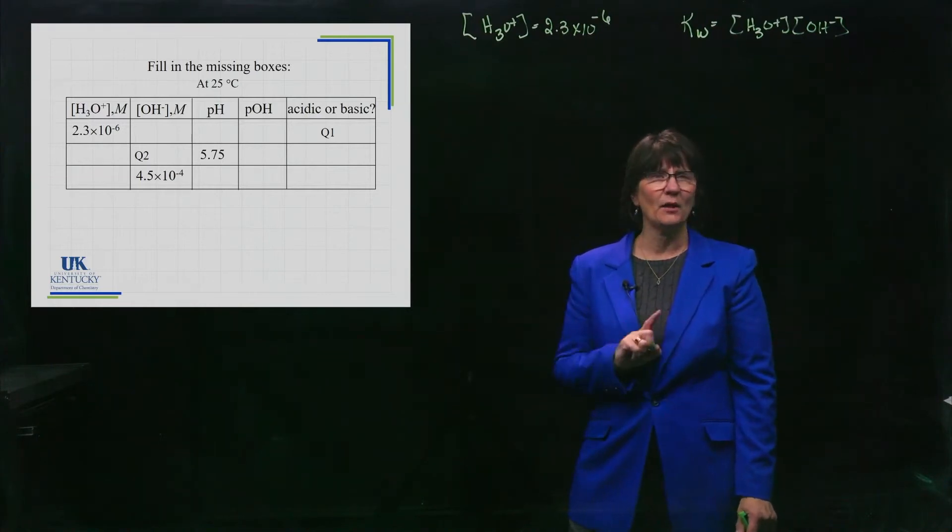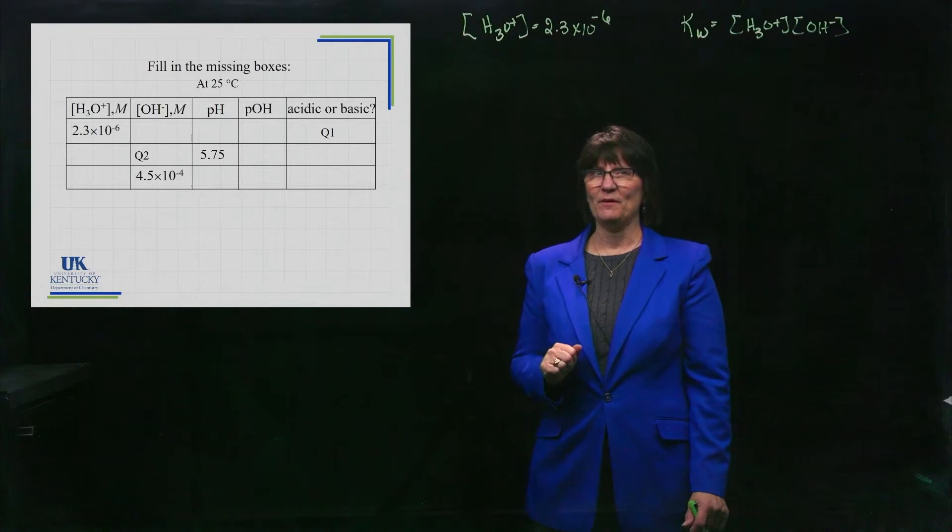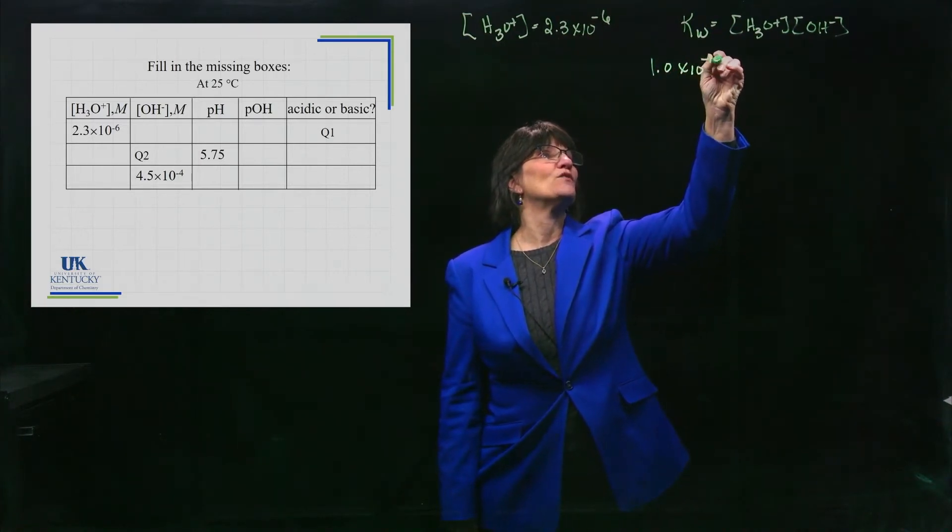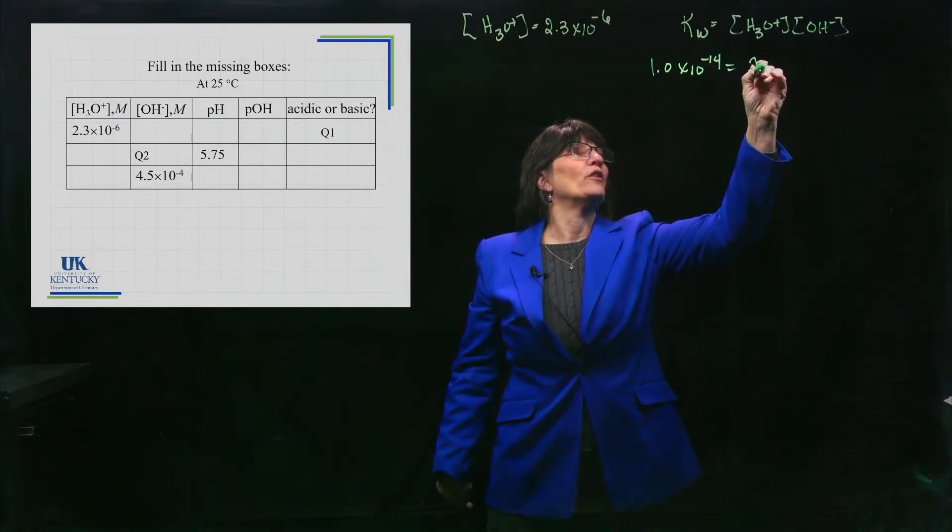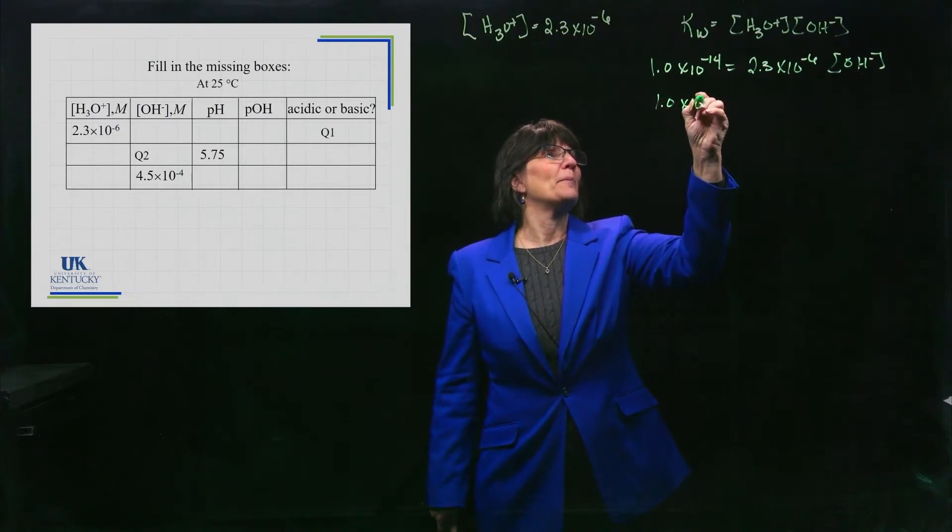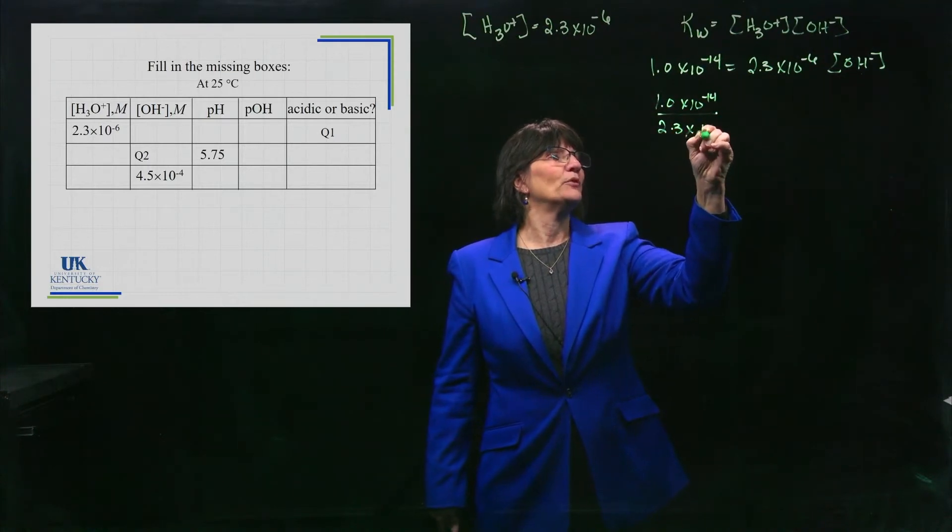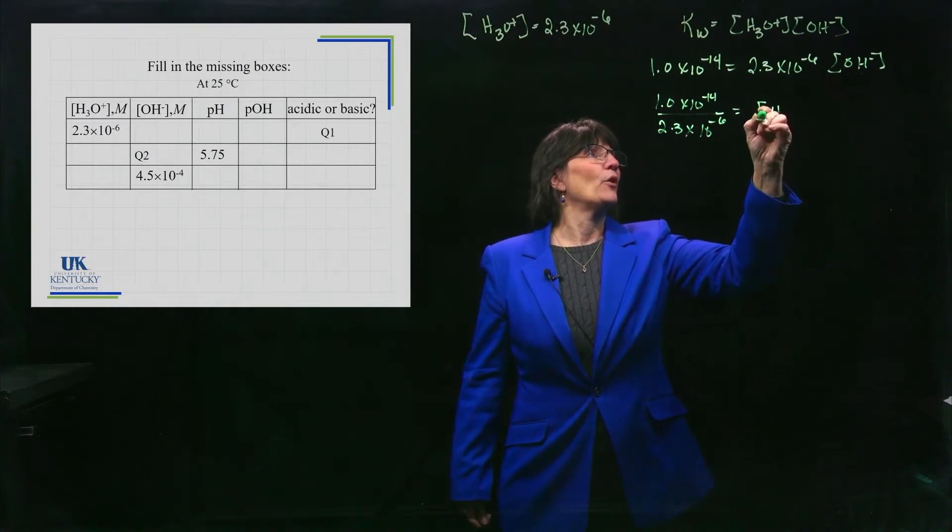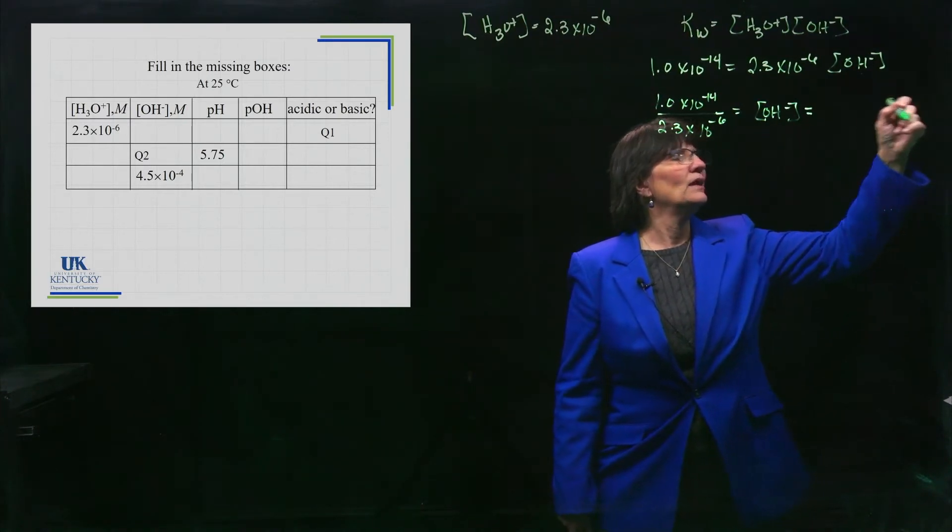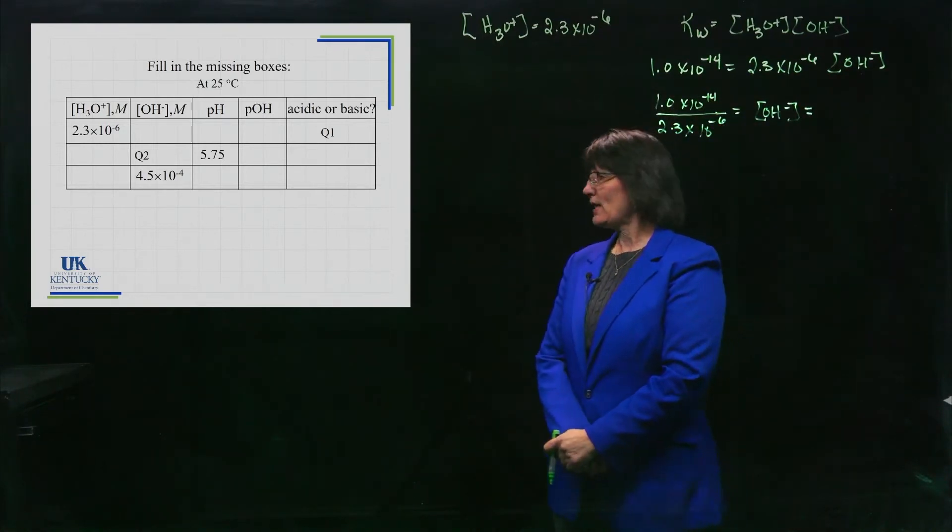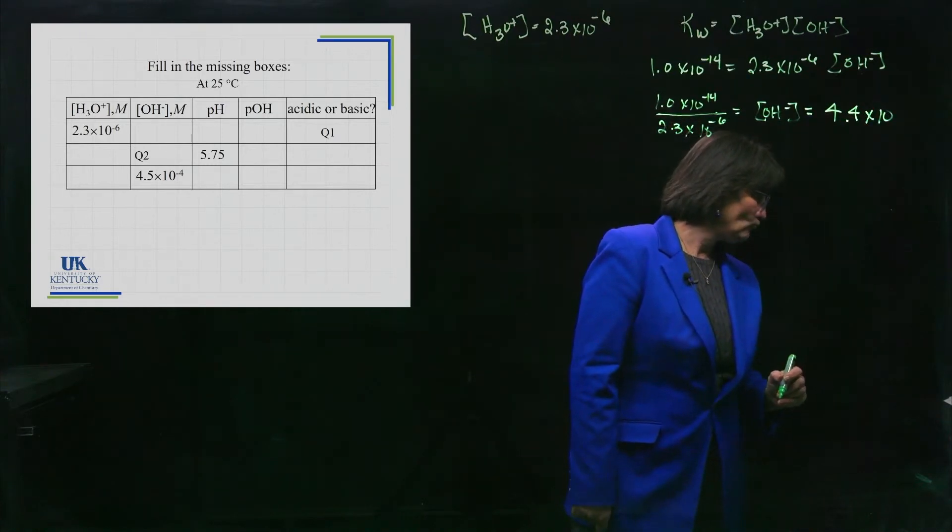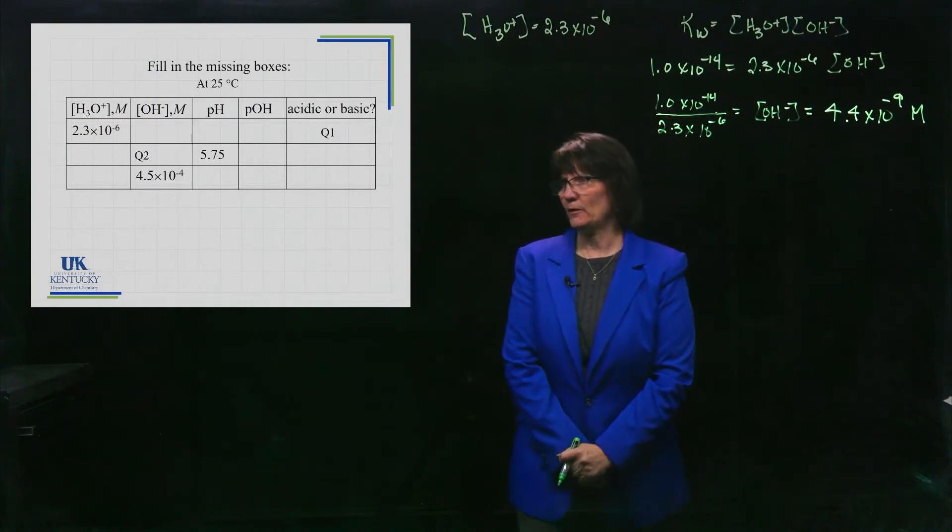Since I'm telling you it's 25, and by the way, if you're working a problem and they don't say anything about temperature, assume it's 25, because if it's anything else, we have to tell you. We know that KW is 1.0 times 10 to the minus 14. We know that H3O+ is 2.3 times 10 to the minus 6. So, we can solve for OH minus. Now, I want you to make sure you stop and plug this into your calculator and get the right answer. You should be using your exponent key when you solve that. We have the OH minus concentration now given to us, and it is 4.4 times 10 to the minus 9.